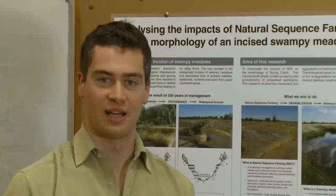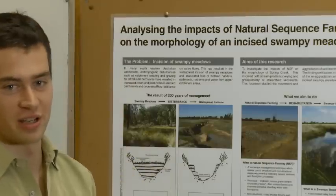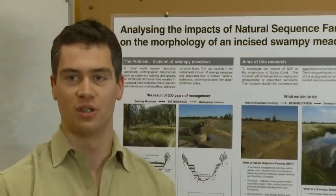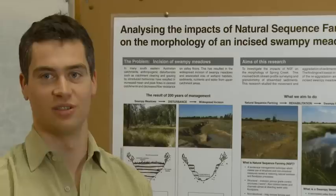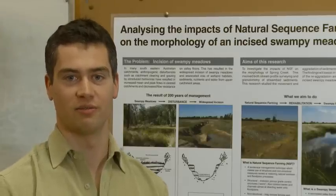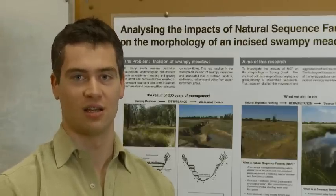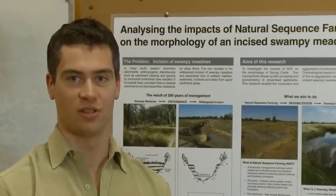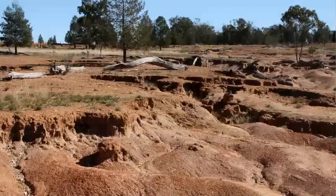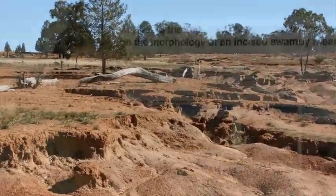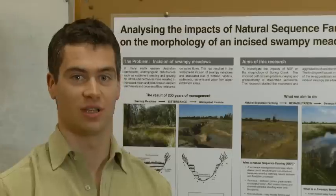The history of swampy meadow incision in Australia dates back to the time of settlement, at which time anthropogenic disturbances such as catchment clearing and grazing of herbivores generated increased peak flows in downstream networks. This increased stream power values and instigated the erosion of many areas of upper catchments, with serious consequences for the environmental health of these areas.